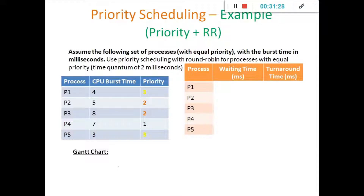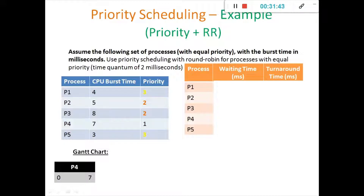Let us consider the same set of processes and their priorities. First, as usual, P4 gets started and completes its execution. It completes at 7 milliseconds. Then you have priority number two given for P2 and P3.